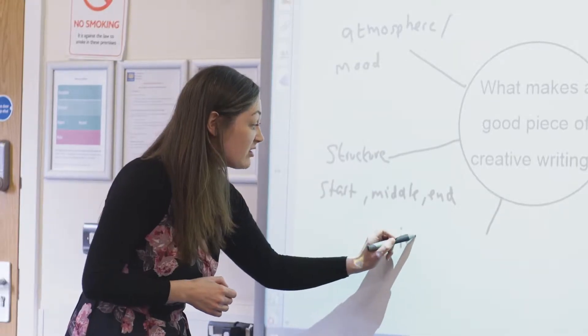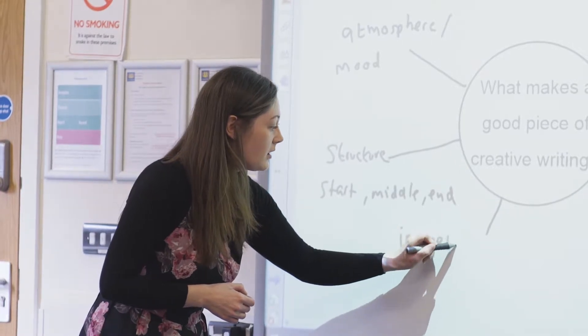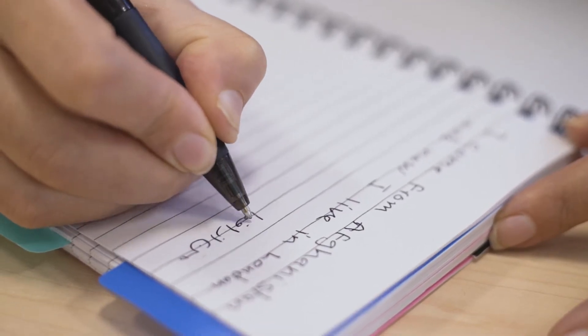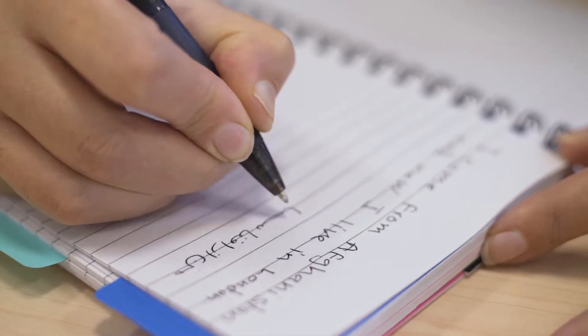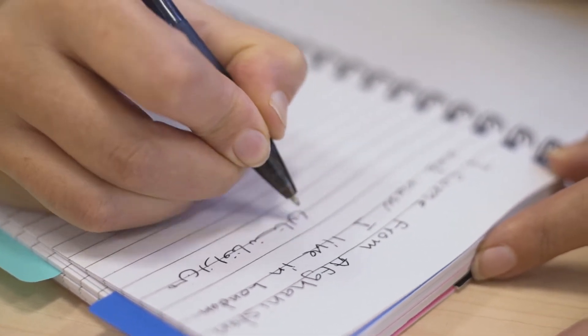In English, you write from left to right, where in Persian we write from right to left. The alphabet is completely different.